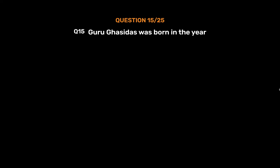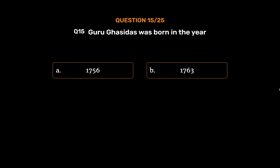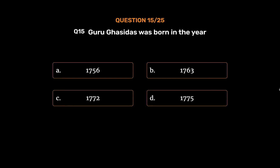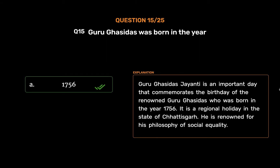Question No. 15: Guru Ghasi Das was born in the year — Option A: 1756. Option B: 1763. Option C: 1772. Option D: 1775. The correct answer is Option A: 1756. Guru Ghasi Das Jayanti is an important day that commemorates the birthday of the renowned Guru Ghasi Das, who was born in 1756. It is a regional holiday in the state of Chhattisgarh. He is renowned for his philosophy of social equality.